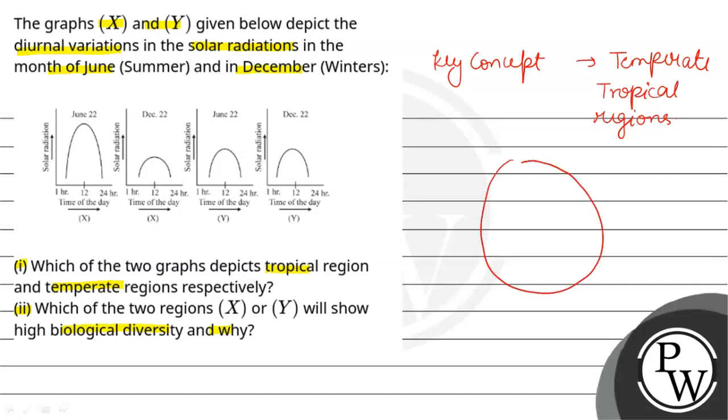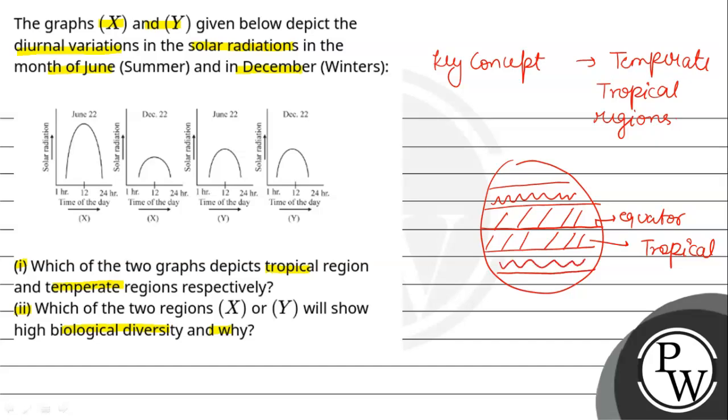Temperature and tropical regions - if I want to show a diagrammatic representation, this is our equator. This area which is our tropical region shows diurnal variation in solar radiations. On the top, the two regions are temperate regions.